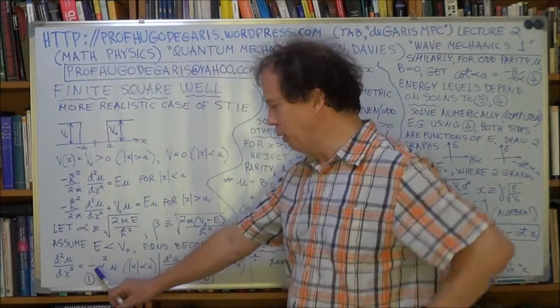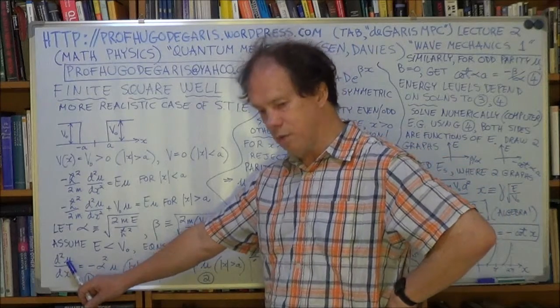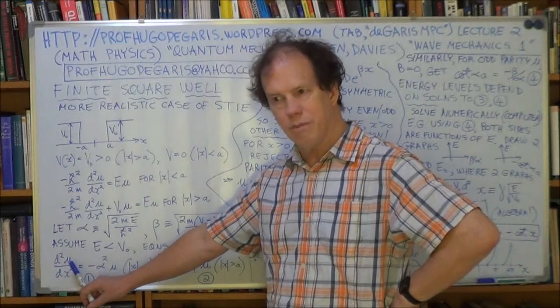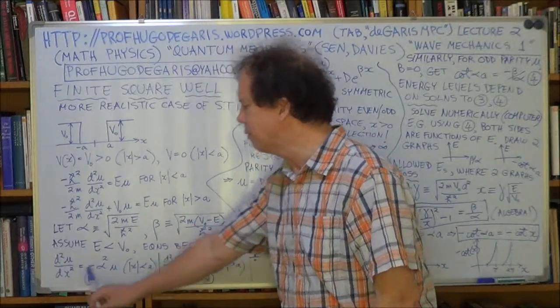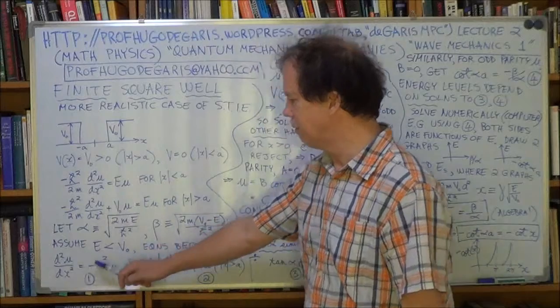We've seen this before, U takes the form of A sine plus B cos, that kind of thing, so nothing new there. So we won't talk about that much.